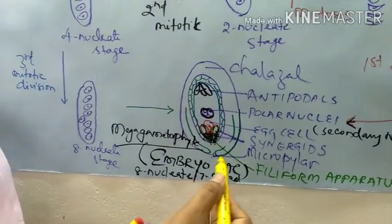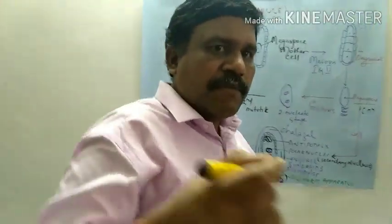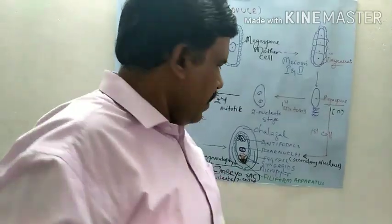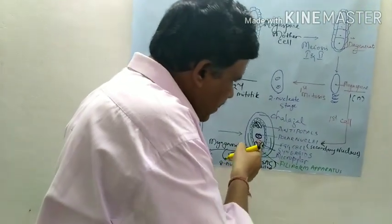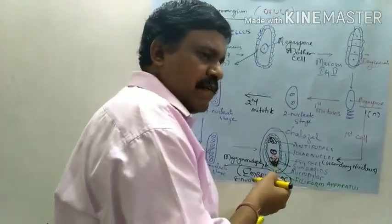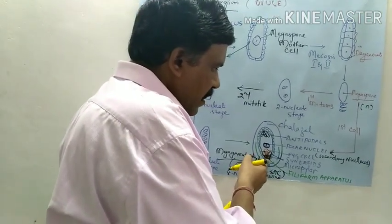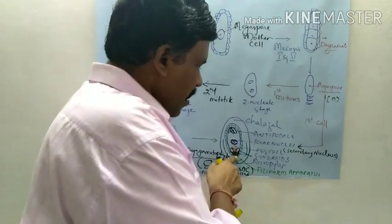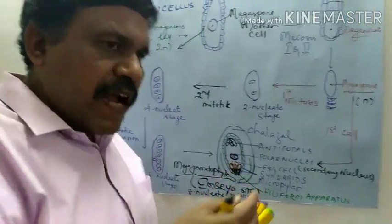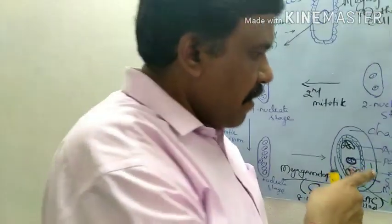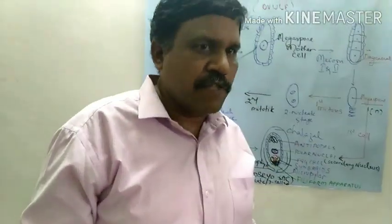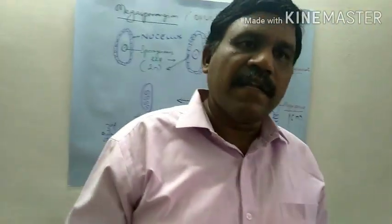The function of the filiform apparatus and synergids is to facilitate the entry of the pollen tube. The pollen tube carries the male gametes, and it is being facilitated and directed to enter here. The pollen tube ruptures and the male gametes are directed by the synergids as well as the filiform apparatus to have the respective fusions — that we will see in the next session.